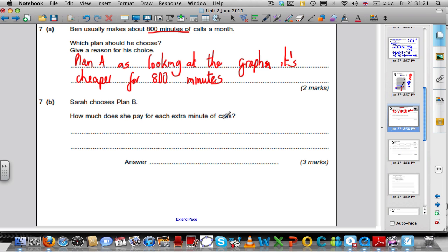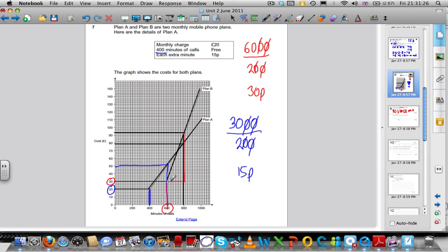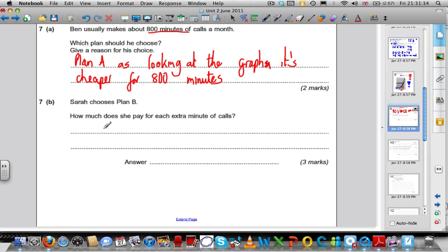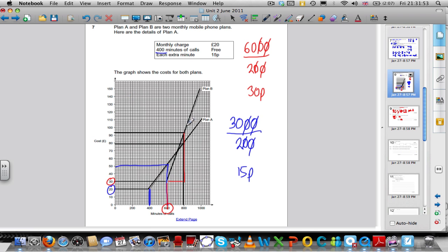Sarah chooses plan B, how much does she pay for each extra minute of call? Sarah chooses plan B, and we already said that for every 200 minutes of calls, she's paying an extra £60. And as we said before, that's £60, which is 6,000 pennies, divided by an extra 200 minutes. So that gives us 30p extra a minute, so 30p is our answer.